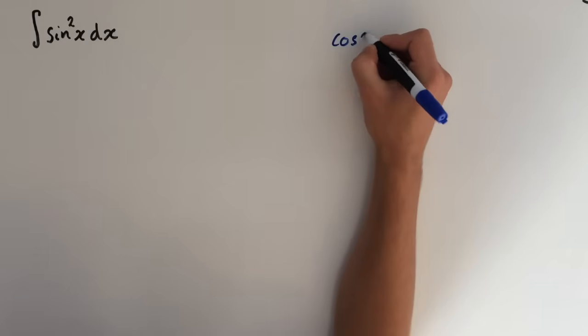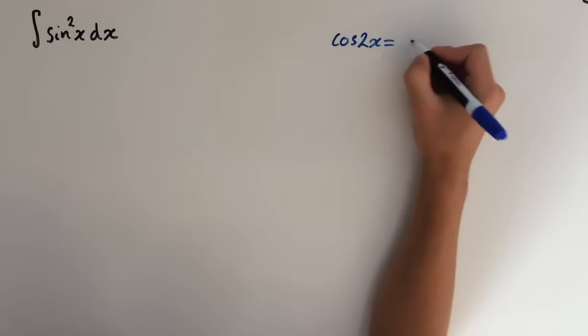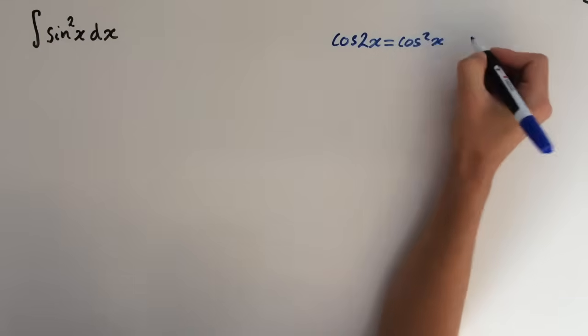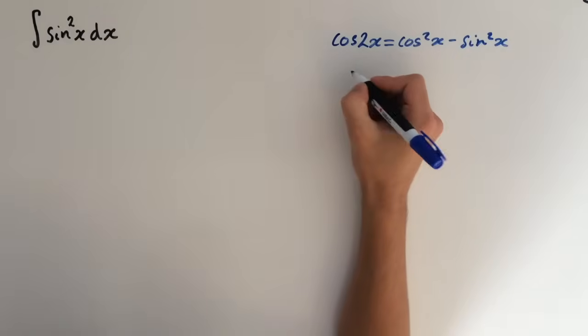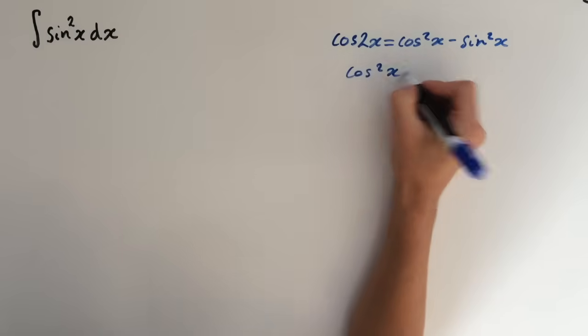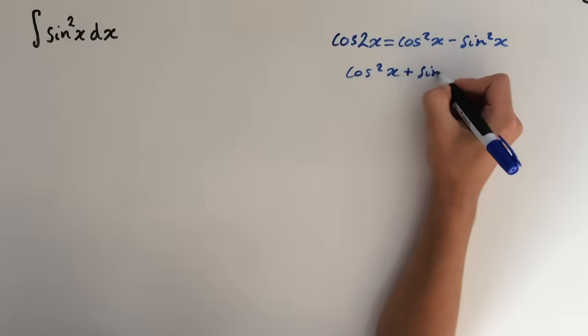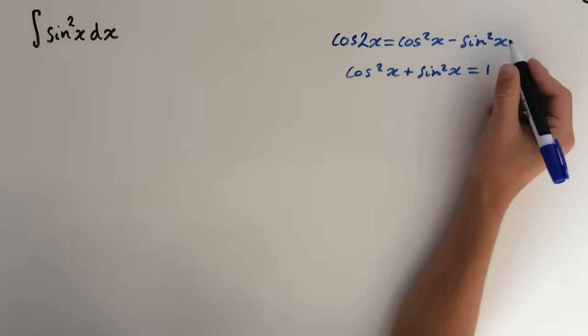So cos 2x equals cos squared x minus sin squared x. And we also know that cos squared x plus sin squared x equals 1. These are both identities.